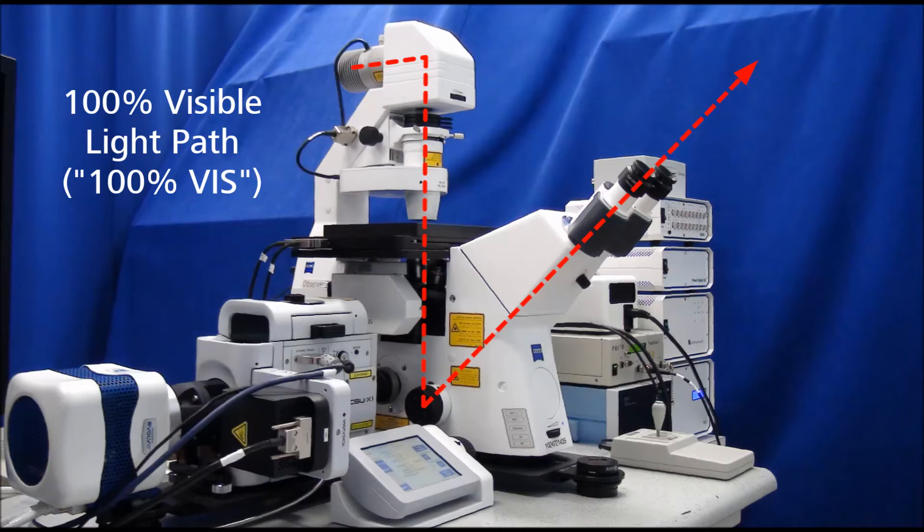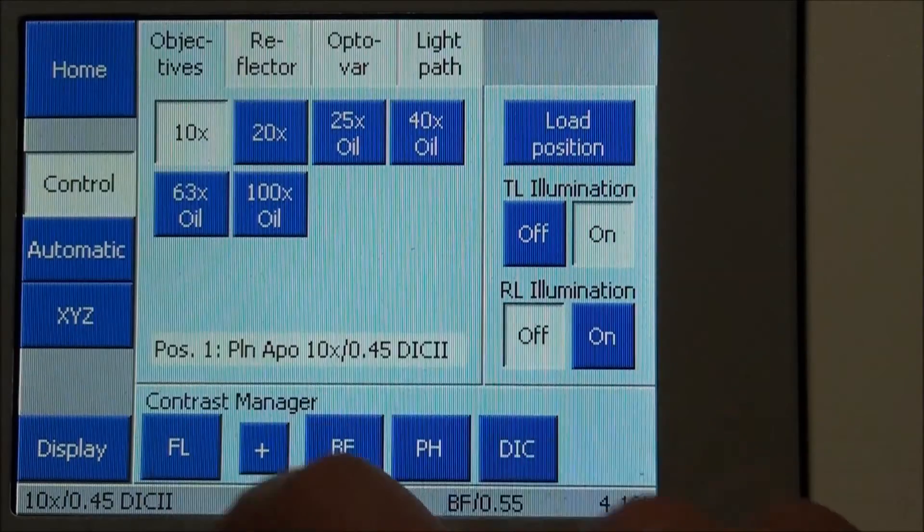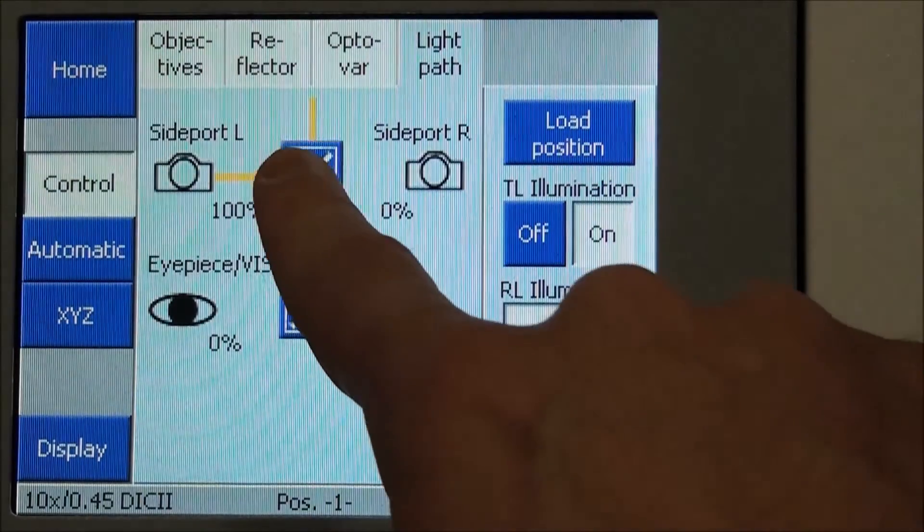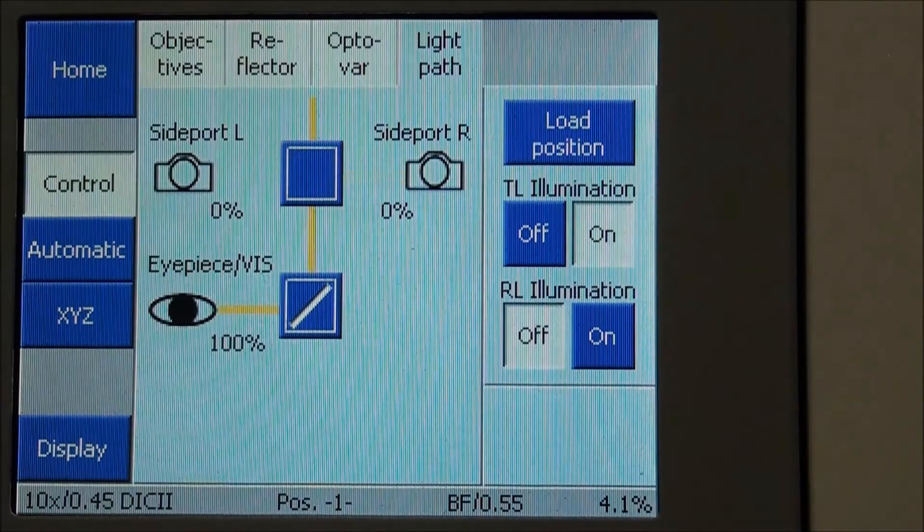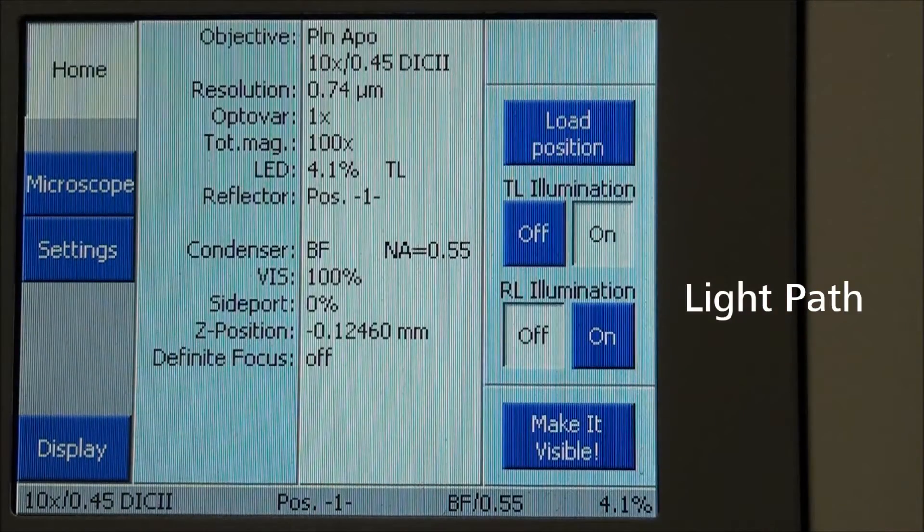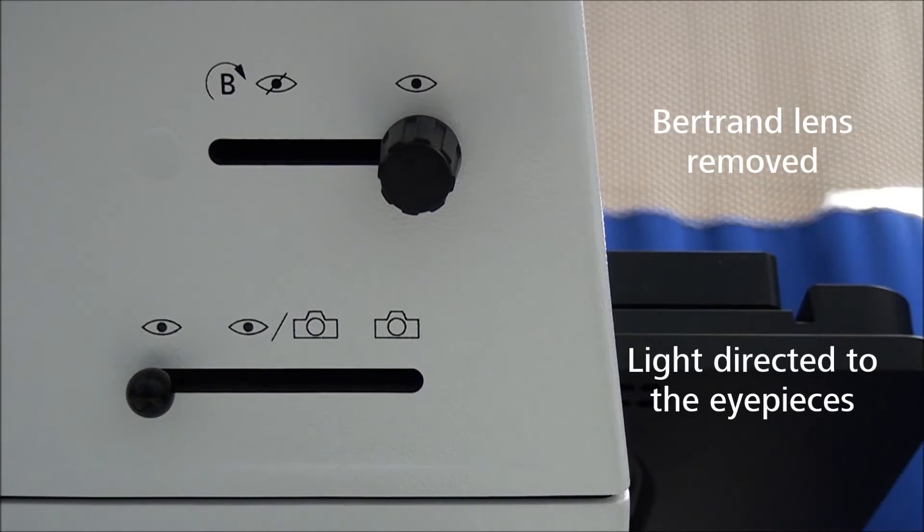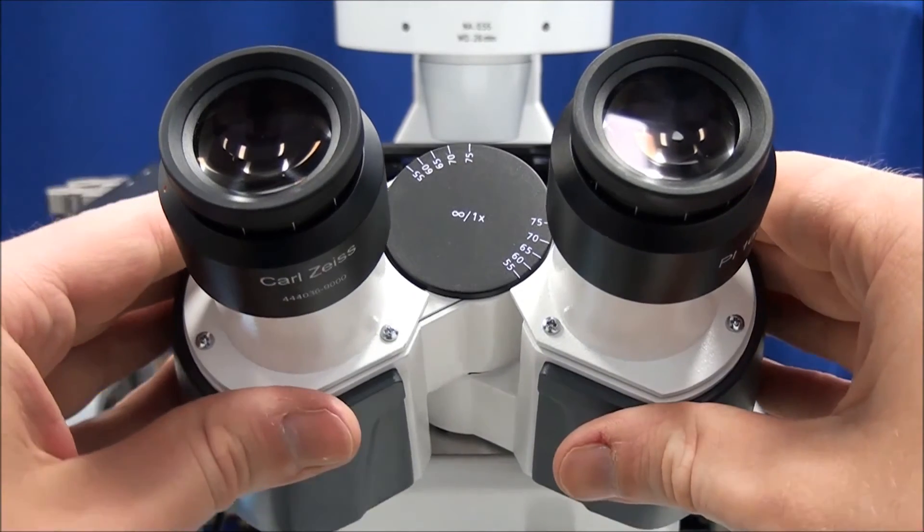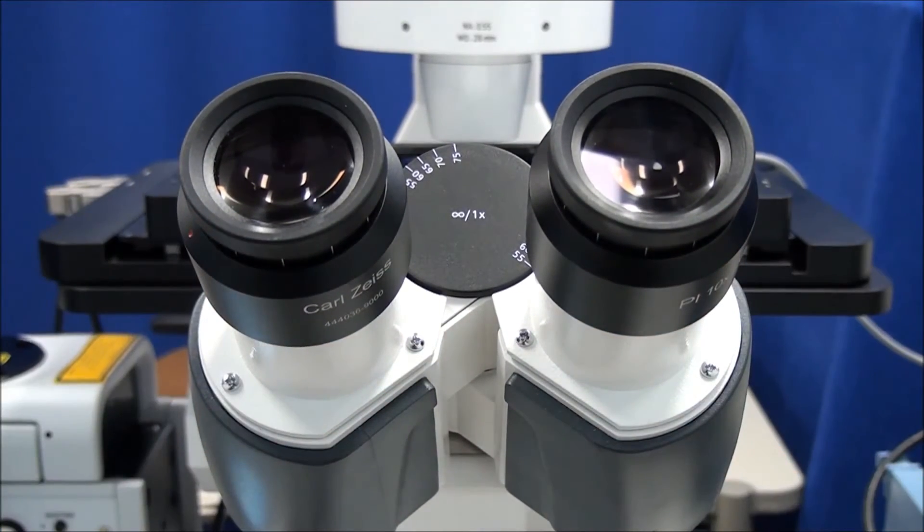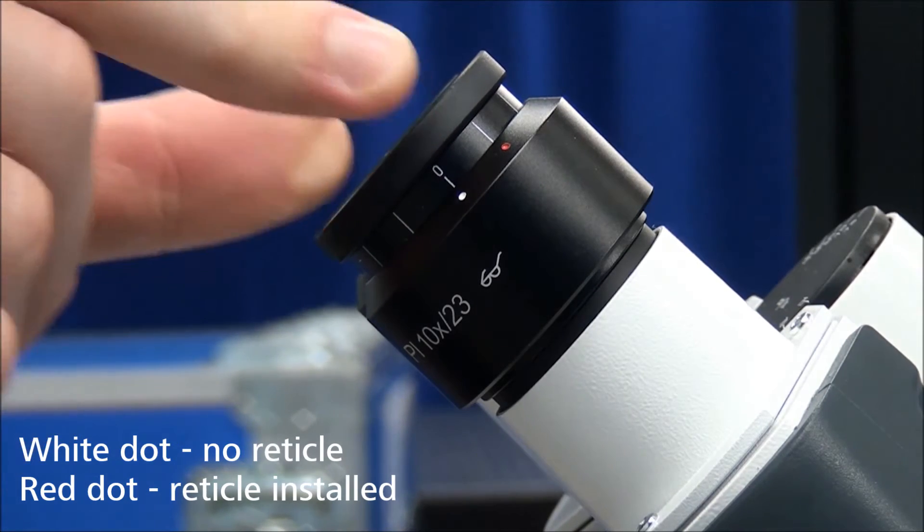Direct the optical path to the eyepieces. Either manually rotate the light path selector, or change the path via the touch screen to 100% vis, as seen on the home screen. On the binocular tube, move the selector to the eyes symbol and remove the Bertrand lens, if equipped. Set the correct interpupillary distance for your eyes and adjust the diopter setting appropriately. Use the red dot if a reticle is installed.